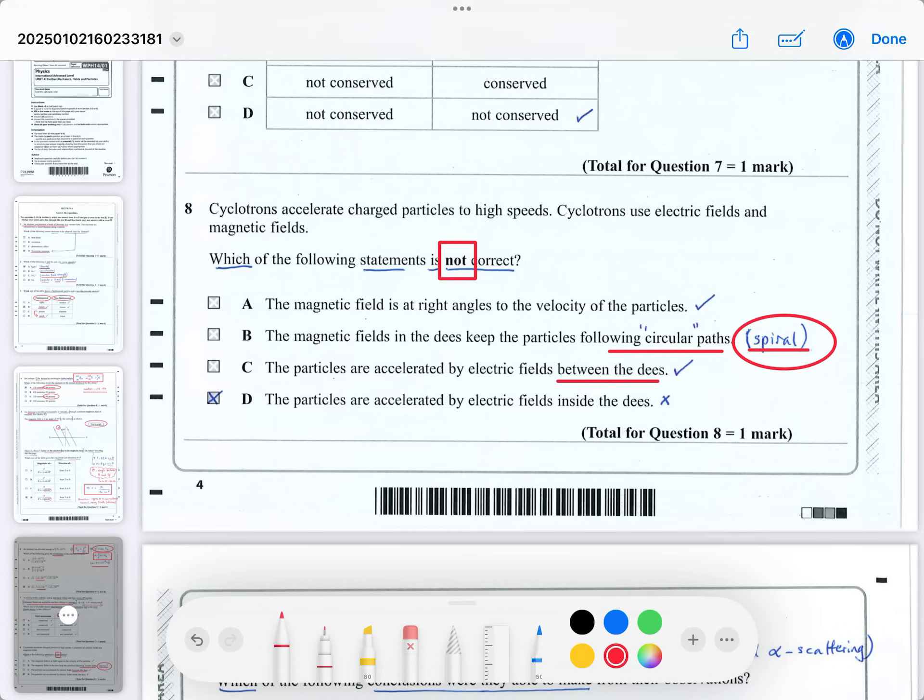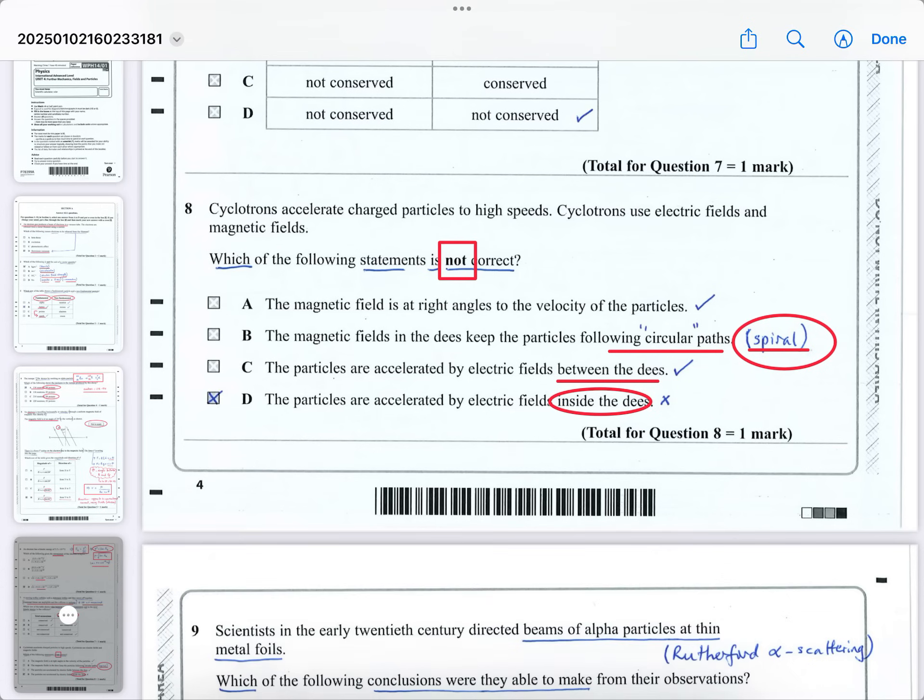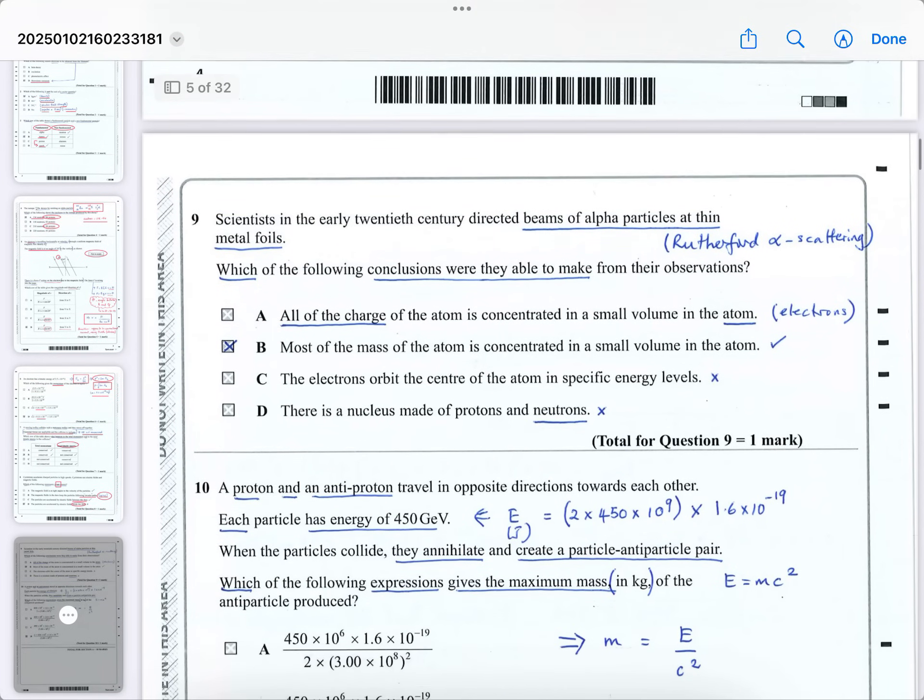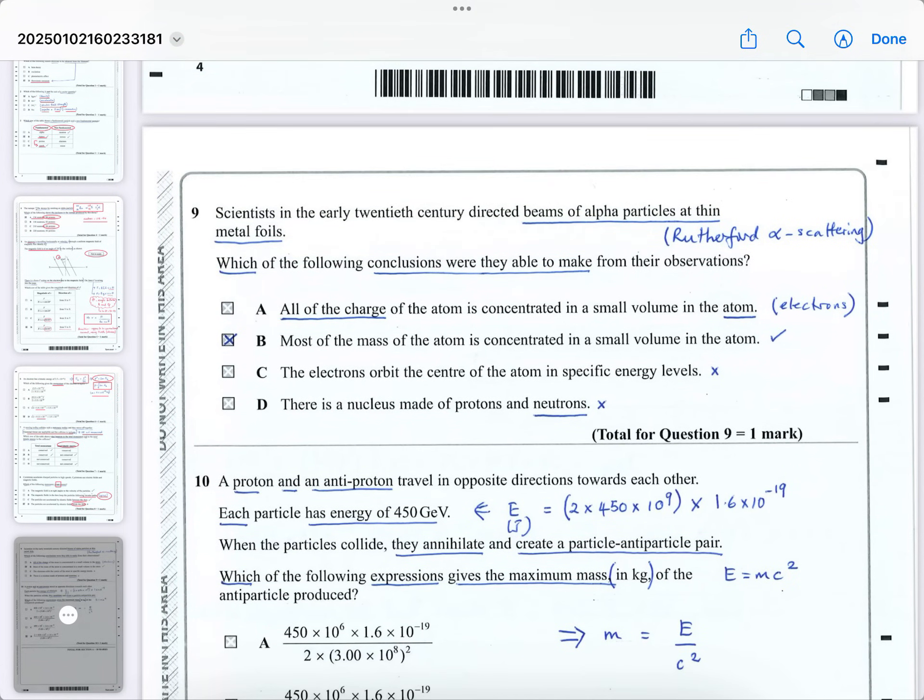And the particles are accelerated by electric fields inside the Ds. No, well, that's incorrect. It's not inside the Ds. Inside the Ds is the magnetic field acting and causing a direction to change to keep them going in circles, ever-increasing radius of circles, so really it's a spiral, so the answer is D. Cyclotrons and linear accelerators come in every exam, either one or the other, or sometimes both, so you really need to know how the cyclotron works, and you really need to know how a linear accelerator works.